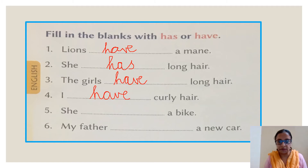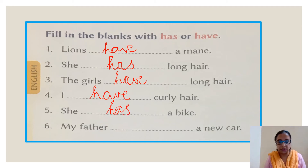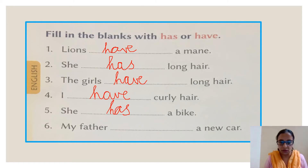The fifth sentence: she dash a bike. She — again a single person. So she has a bike. And the last sentence: my father dash a new car. My father — we are talking about one person. My father has a new car. Has.